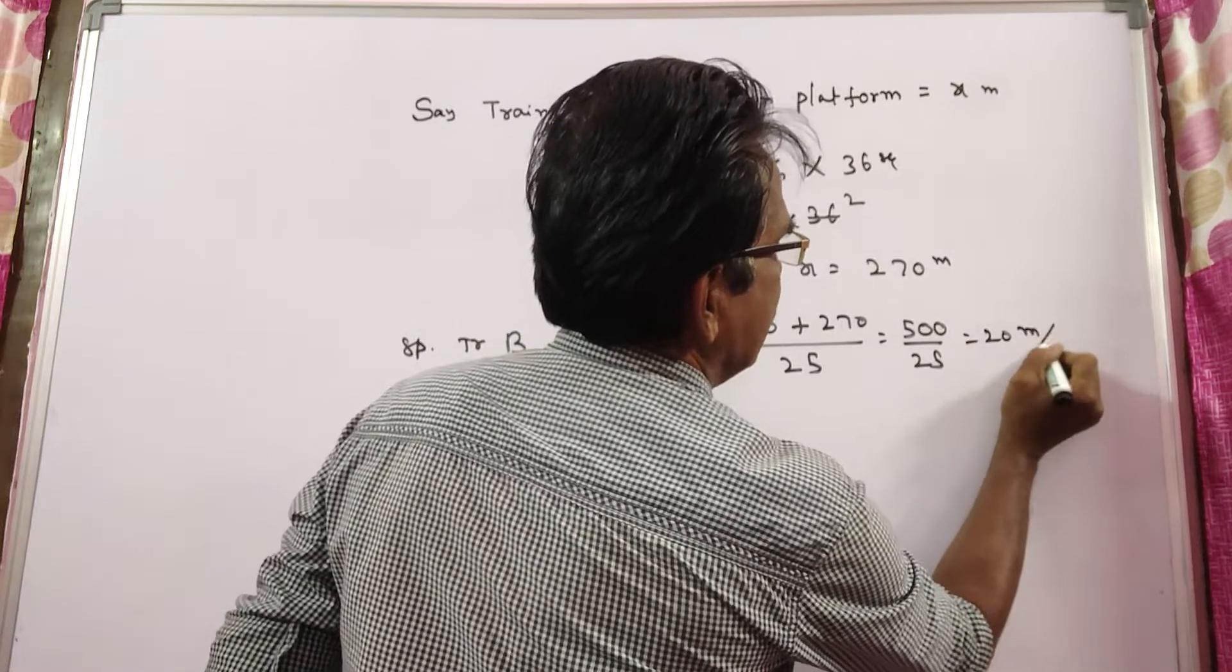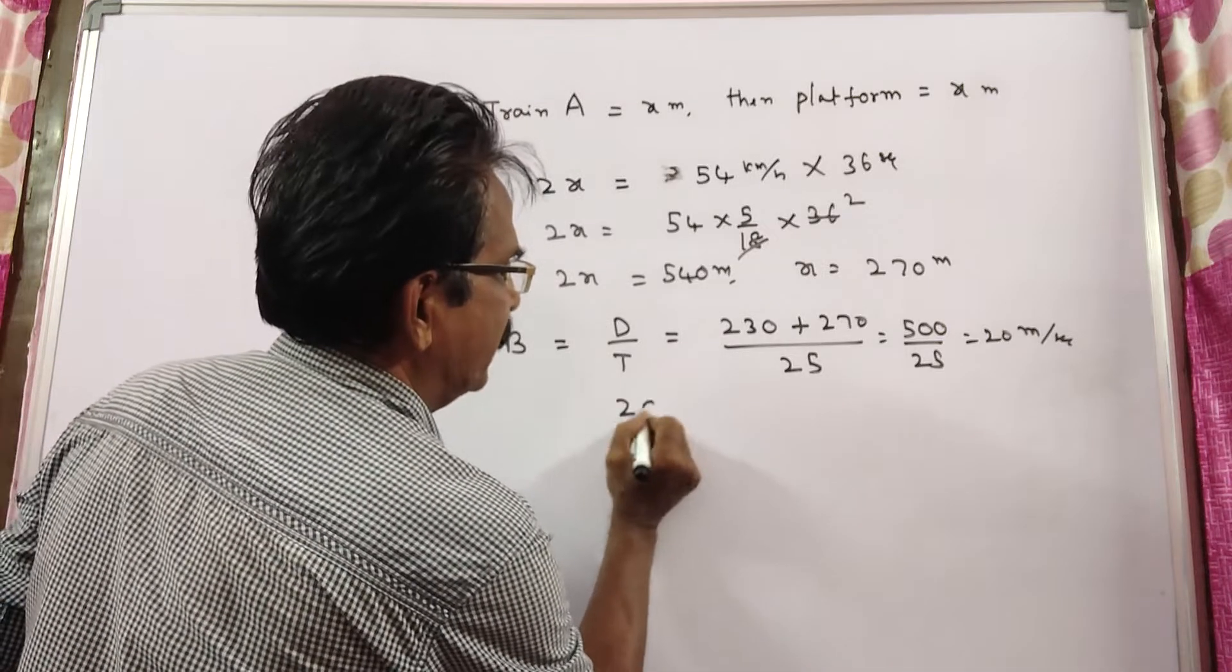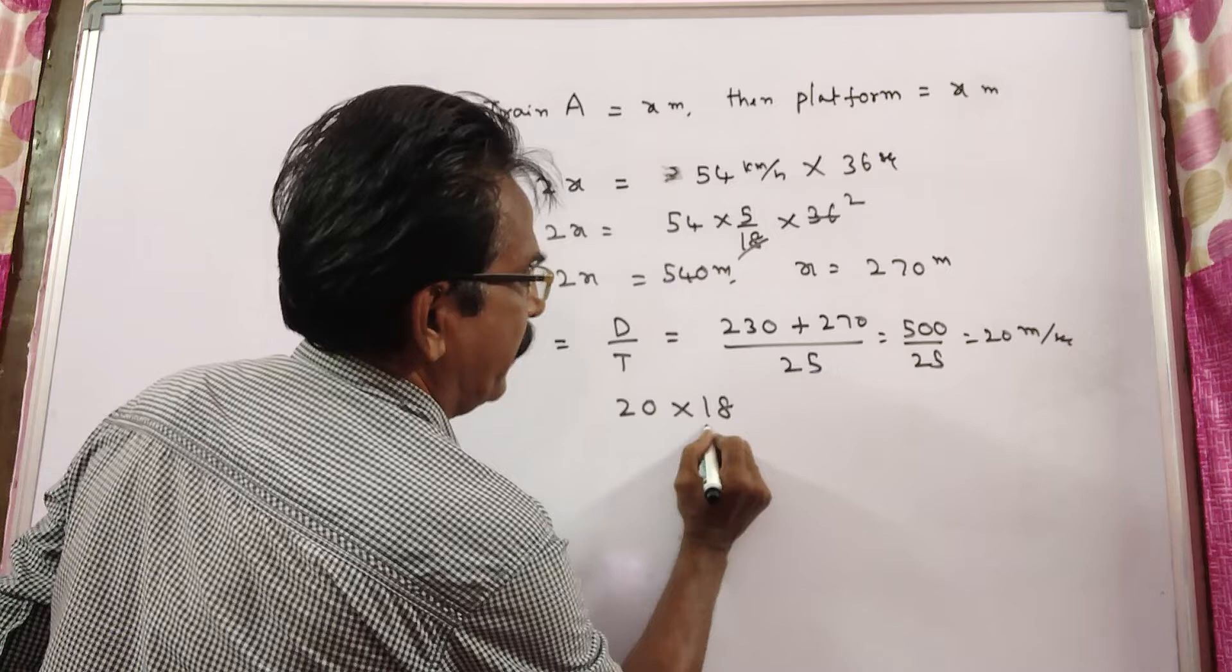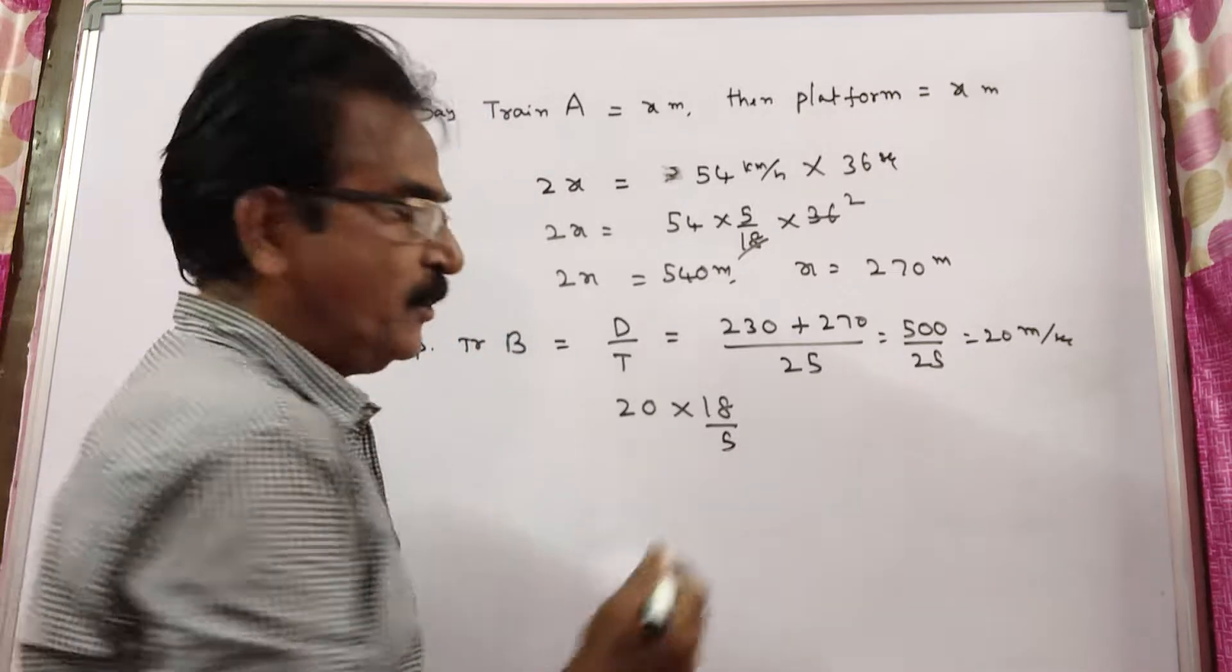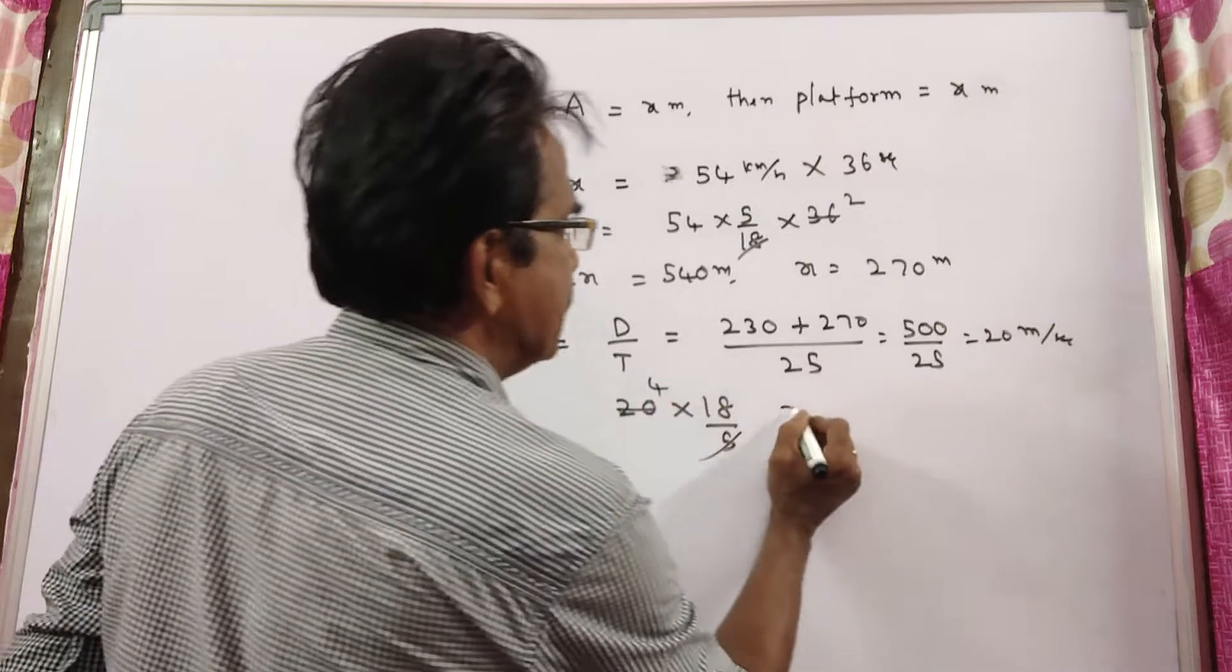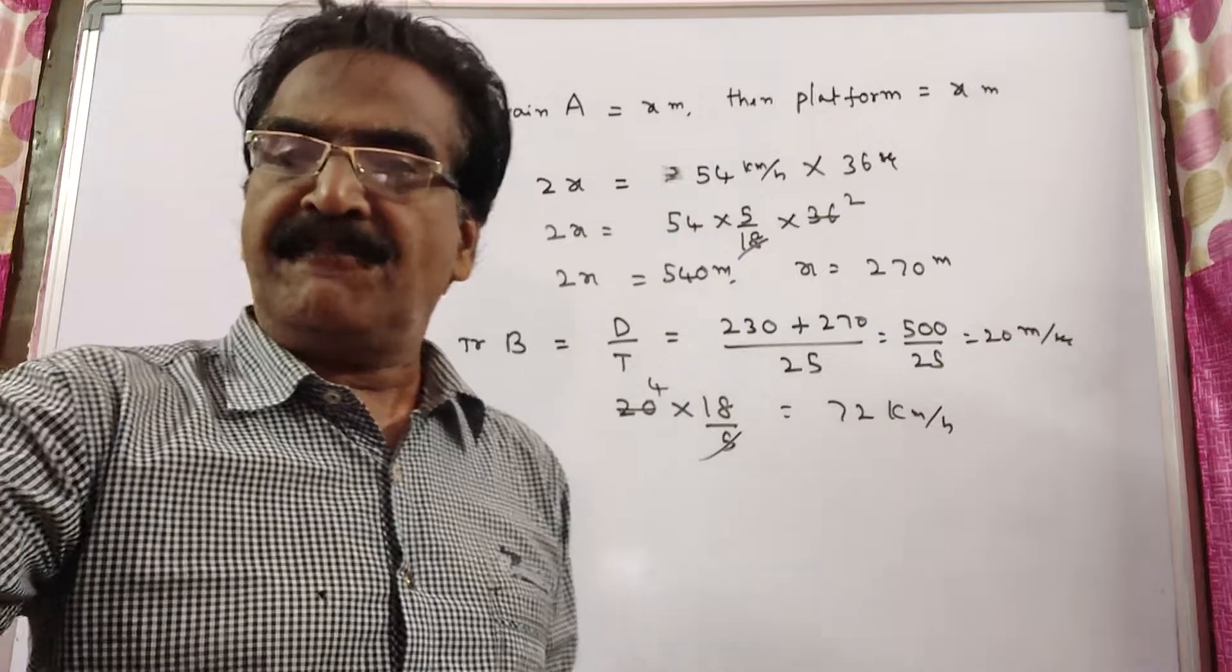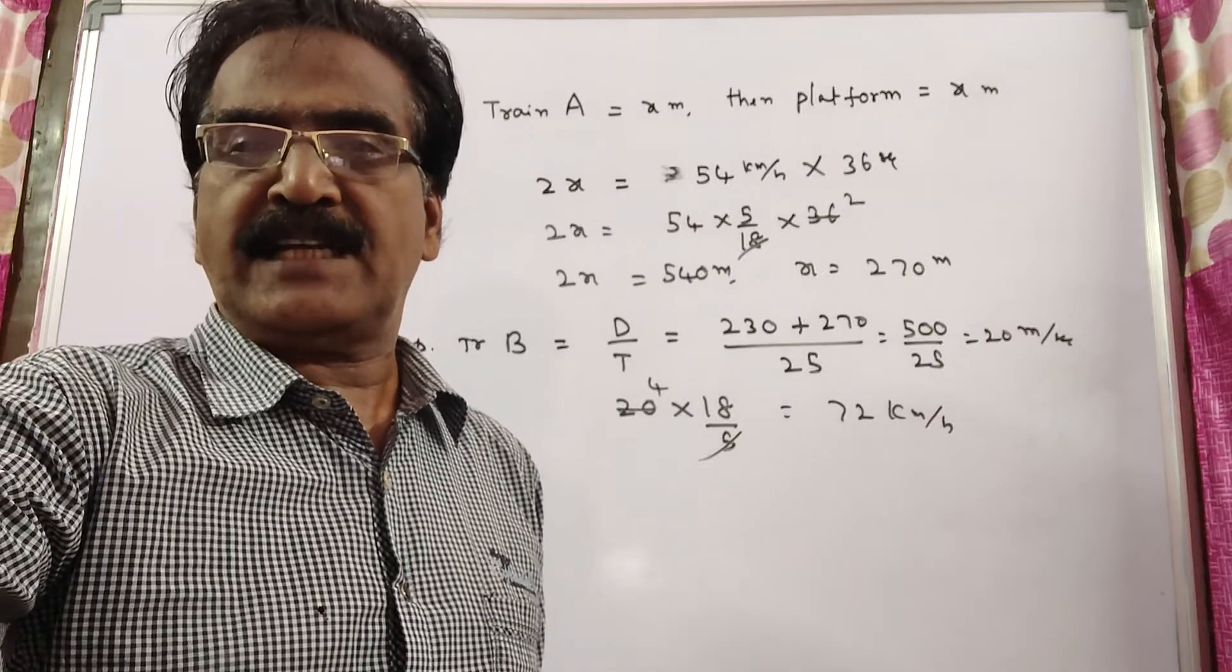20 meters per second - if you want in kmph, multiply with 18 by 5. By doing 18 by 5, you get the velocity in kmph, which is 72 kmph. This is the speed of train B. Okay friends, thank you, have a nice day.